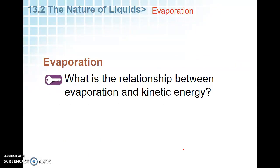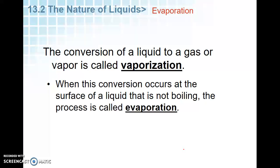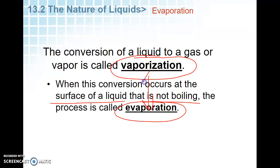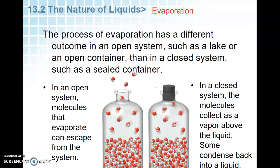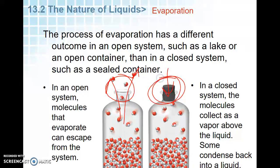Evaporation — what's the relationship between evaporation and kinetic energy? When we take any liquid to a gas, that process is called vaporization. This conversion occurs at the surface when it is not boiling — we call that evaporation. So evaporation is a specific form of vaporization. In an open system, molecules evaporate and escape — that's how puddles disappear after rain.